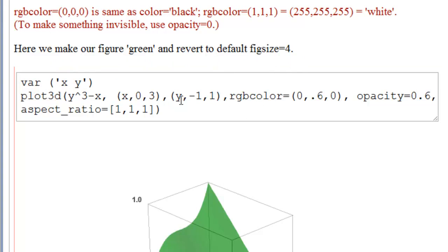So here we're going to make our figure green and revert to default figure size four. So the same things that we had before. We have the same function. RGB color. Now we have 0.6, 0. So if you multiply 0.6 times 255, you'll get the RGB color of 0, 153, 0. We've increased our opacity. So it's going to be a little less transparent. And we have left our aspect ratio at 1, 1, 1. Let's see that.